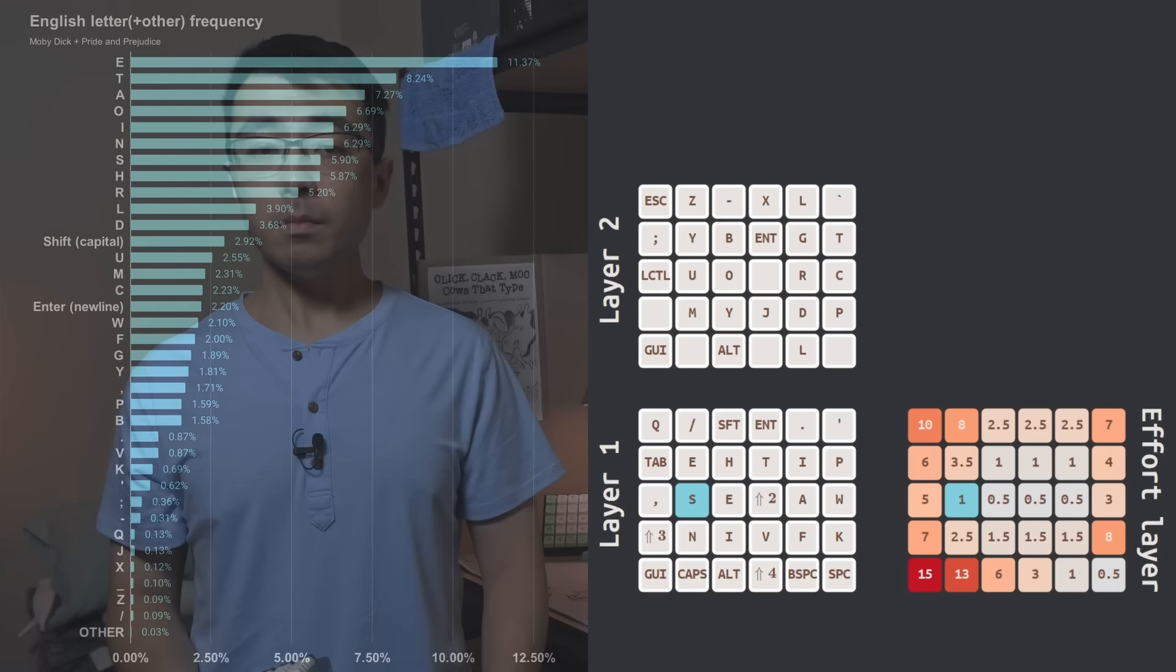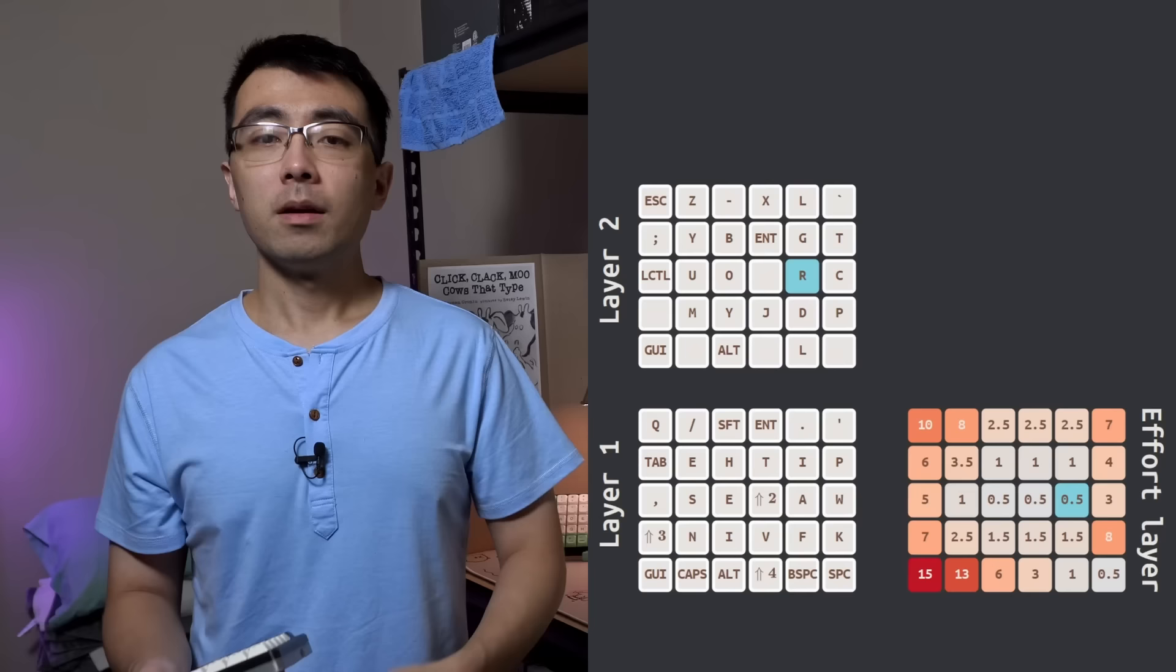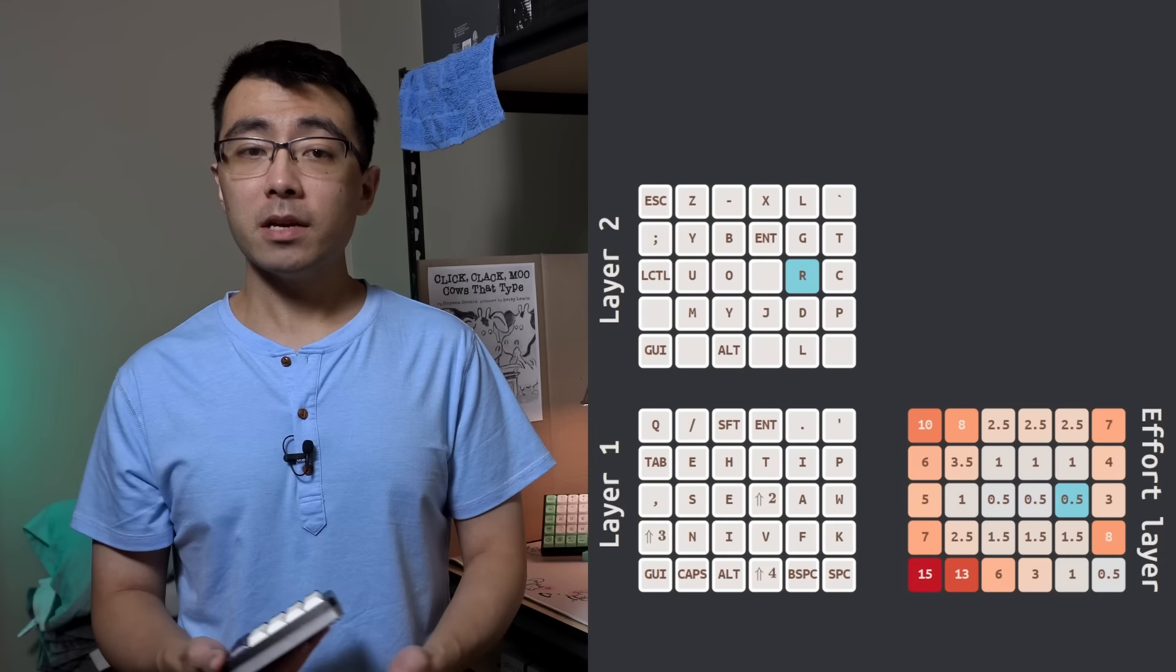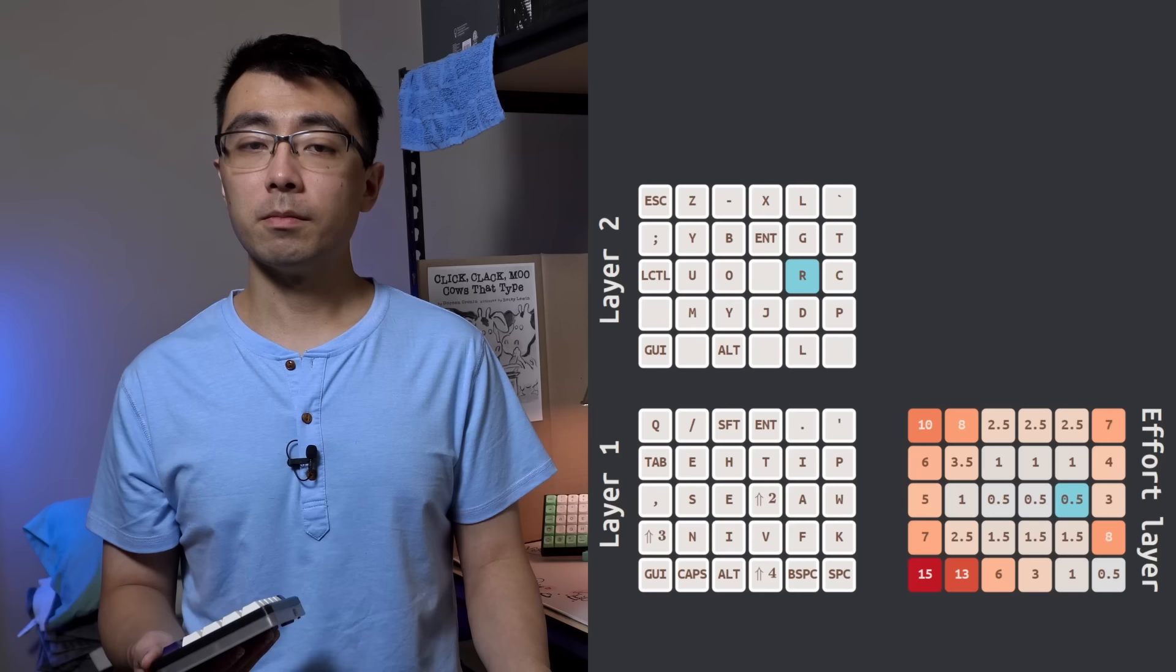Pulling up a letter frequency chart, you can see common letters are placed in relatively low effort positions. E, T, A, I, N, S. For a letter like R, despite requiring a layer switch, you can see that the location of the layer switch, up arrow 2, and the location of R, both low effort at 0.5, meaning the overall sequence can be calculated as the sum of the two, coming in at a fairly low effort total of 1.0.